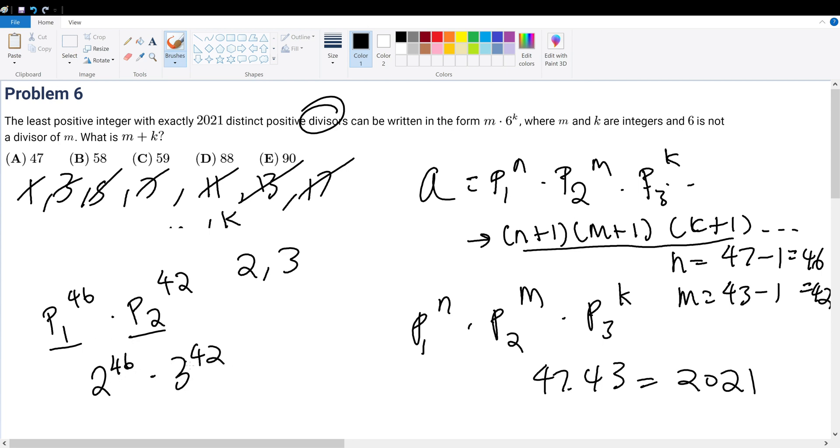Once we do that, we also know it's written in the form of 6 to the k, so that means the power of 3 and the power of 2 has to be the same. They're not the same, so how do we get them to the same? Well, 42 is less than 46 by 4.